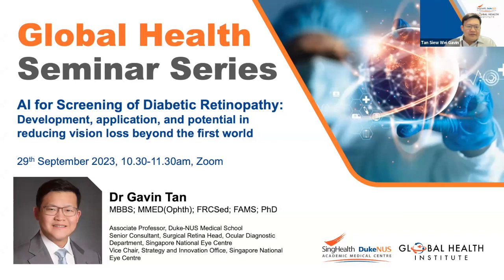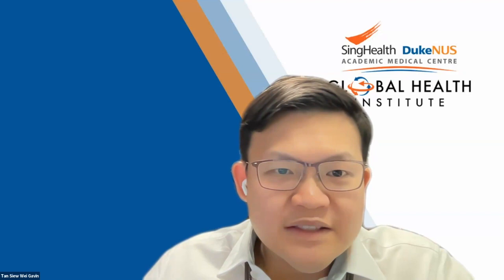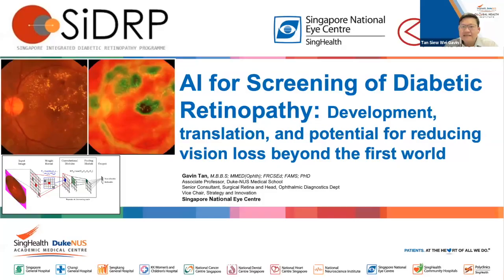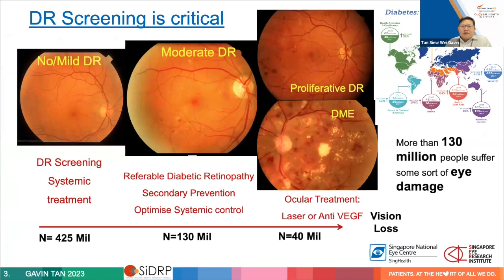Hi everyone, thanks Evelyn for the kind introduction. I'm Gavin, from the National Eye Centre and the Singapore Eye Research Institute. I'm going to talk a little about our experience with developing an AI, implementing it, and try to put a global health slant to this, since that's the theme of these seminars. These are my financial disclosures and conflict of interest declarations.